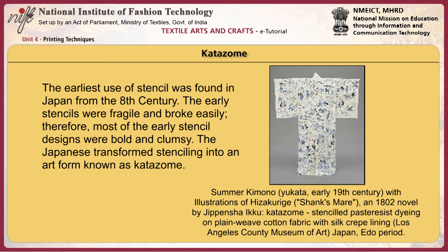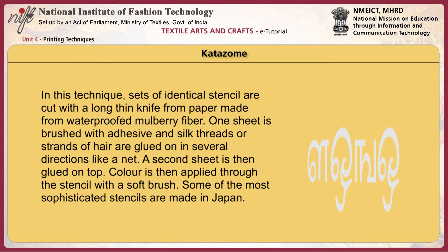The earliest use of stencil was found in Japan from the 8th century. The early stencils were fragile and broke easily; therefore, most early stencil designs were bold and clumsy. The Japanese transformed stenciling into an art form known as katazome. In this technique, sets of identical stencils are cut with a long thin knife from paper made from waterproofed mulberry fibre. One sheet is brushed with adhesive and silk threads or strands of hair are glued on in several directions like a net, then a second sheet is glued on top, and colour is applied through the stencil with a soft brush.